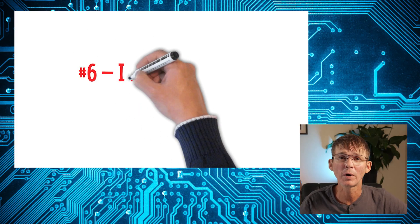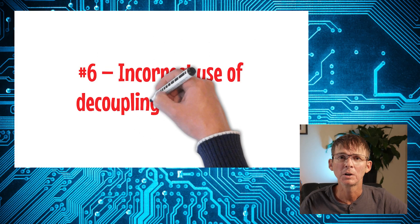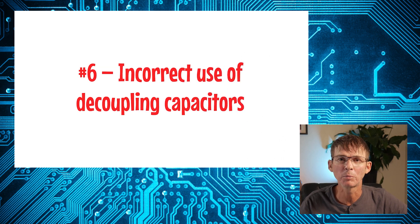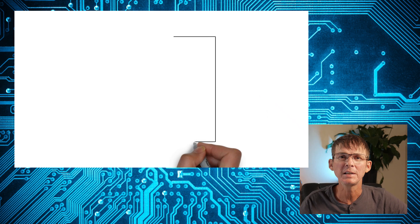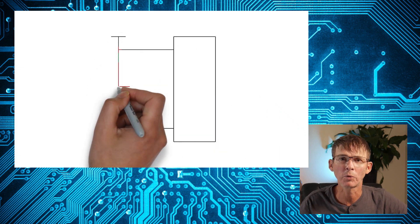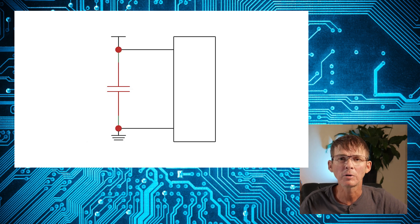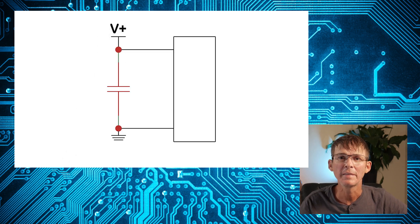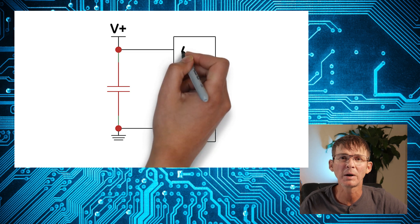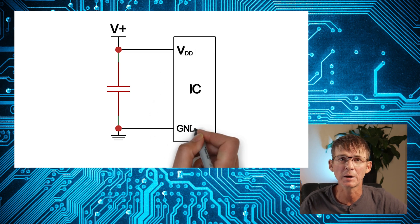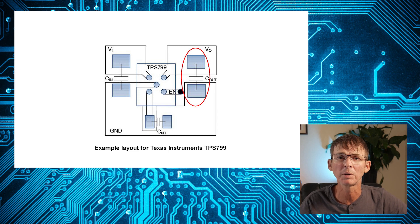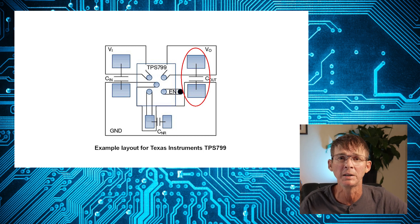The next specific technical design mistake commonly seen on printed circuit board designs is the incorrect use of decoupling capacitors. Critical components need a clean, stable voltage source to operate properly, and decoupling capacitors are placed on the power supply rail to help with this. For the decoupling capacitors to work their best, they must be placed as close as possible to the pin requiring the stable voltage. It's also critical to place the output capacitor for the power supply regulator as close as possible to the output pin of the regulator.